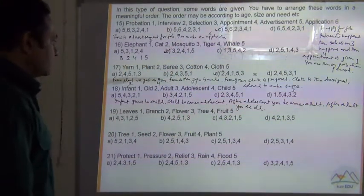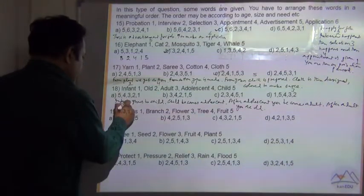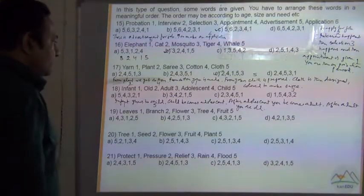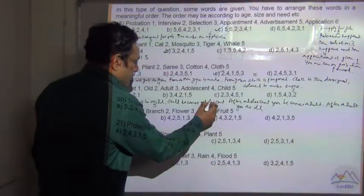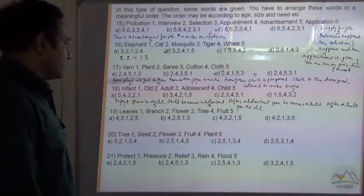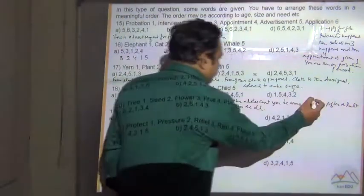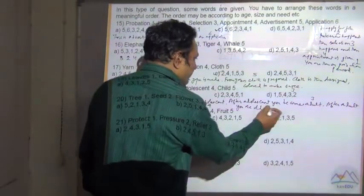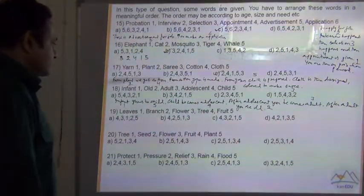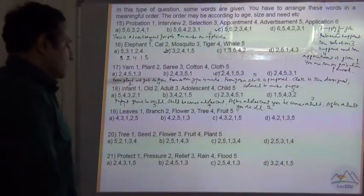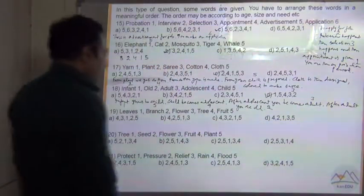So infant is your 1. Child is 5. Child becomes adolescent, that is 4. After adolescent you become adult, that is 3. And after adult you are old, that is 2. So the sequence is 1, 5, 4, 3, 2. Your answer is D.